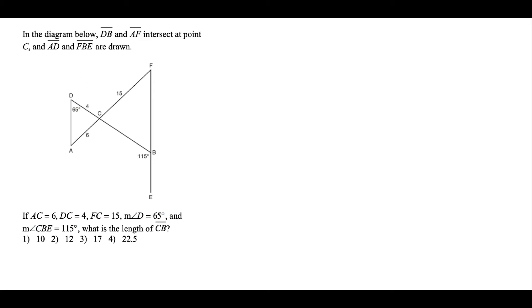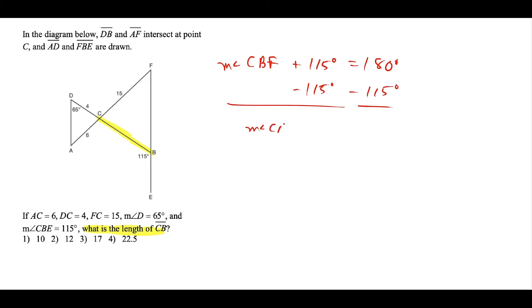For this last question, all given information is indicated on the diagram and we need to find the length of segment CB, which we'll call X. We have a 115 degree exterior angle, so angle CBF plus 115 equals 180 degrees because they form a linear pair. Subtracting 115 from both sides gives angle CBF equals 65 degrees. This also confirms the lines are parallel since the alternate interior angles formed are congruent, but the actual goal is finding CB.